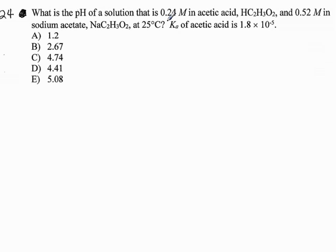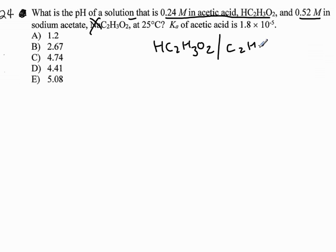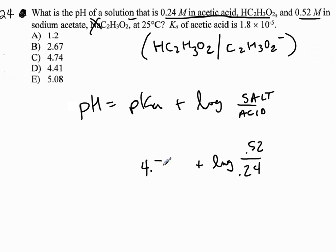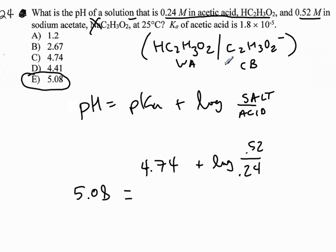Question 24: what is the pH of a solution that is 0.24 M acetic acid (CH₃COOH) and 0.52 M sodium acetate (C₂H₃O₂⁻)? Sodium is a heartbreaker, so I have a conjugate acid-base pair — that means I use Henderson-Hasselbalch. pH equals pKa plus log of 0.52 over 0.24. With pKa = 4.74, after taking the log and adding, I get a pH of 5.08. Answer is E.